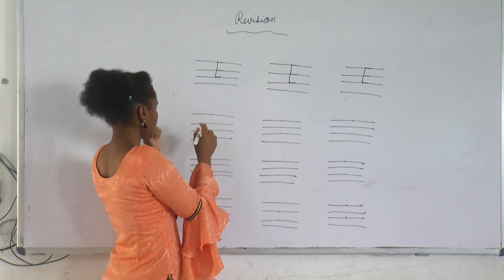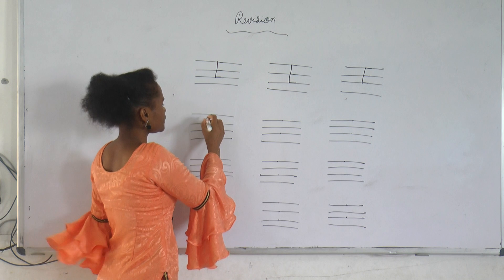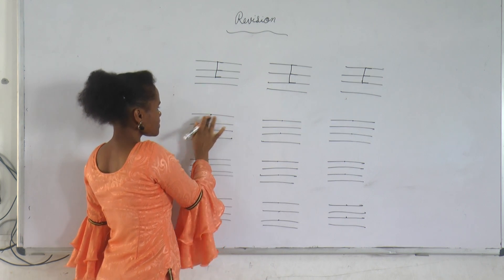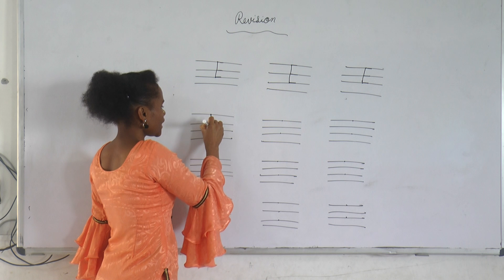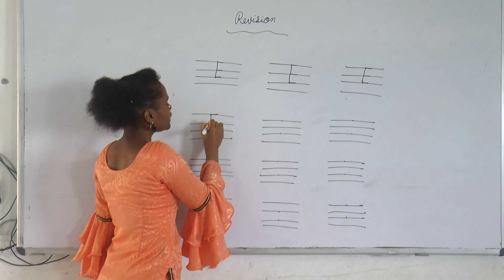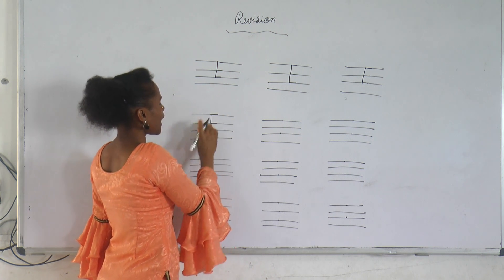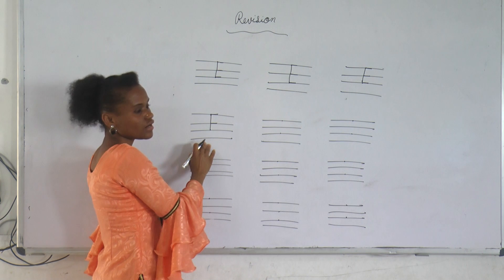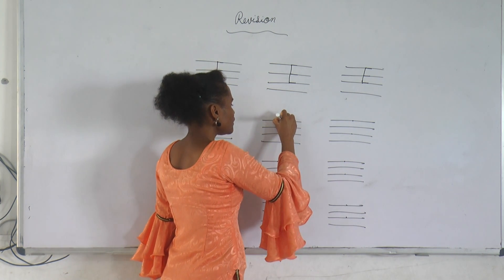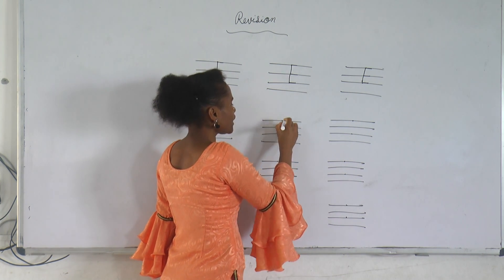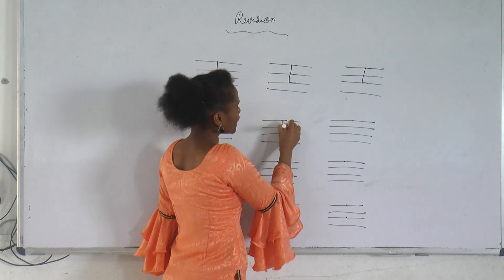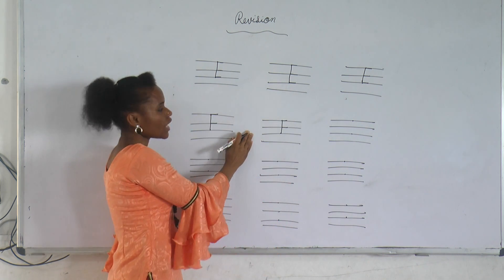Next letter is F. F for fish. Standing line, sleeping line, sleeping line. F. F for fish. Once again: standing line, sleeping line, sleeping line. F for flower.